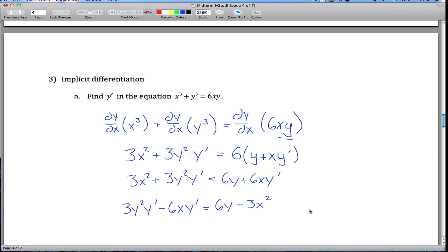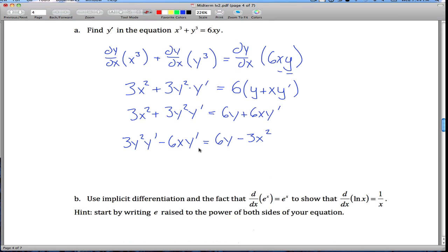And then finally, if we factor out a y prime from here, we'll be left with y prime times this minus this, so maybe I'll do two steps at once, we'll factor out a y prime and then divide by everything that's left, and we'll be left with 3y squared minus 6x on the bottom here. And there is your derivative, implicit differentiation.